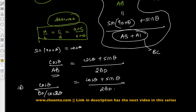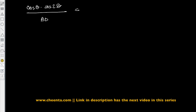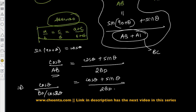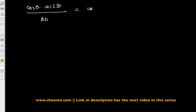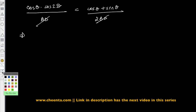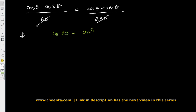So on whiteboard 2, we have: cosine of theta times cosine of 2 theta, divided by BD, equals (cosine of theta plus sine of theta) divided by twice BD. So BD cancels. We know that cosine of 2 theta equals cosine squared theta minus sine squared theta.